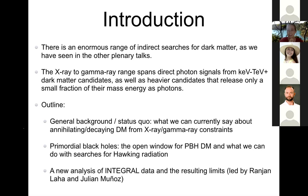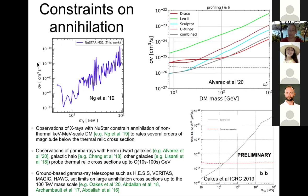The lower mass end of that window is defined by what we can do in terms of searches for Hawking radiation, and it turns out that the Hawking radiation in the region of interest for primordial black holes being dark matter is in the soft gamma ray band. I want to tell you about a recent analysis we did, which is a super simple, basic, not very sophisticated analysis, but which nonetheless pushed the boundary of the allowed region for primordial black holes up a little bit.